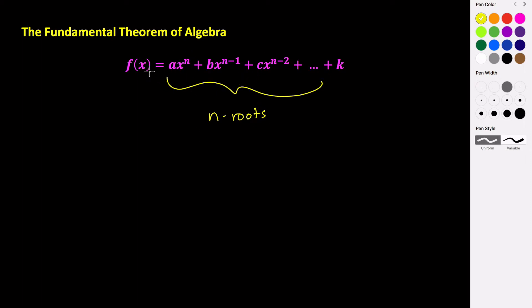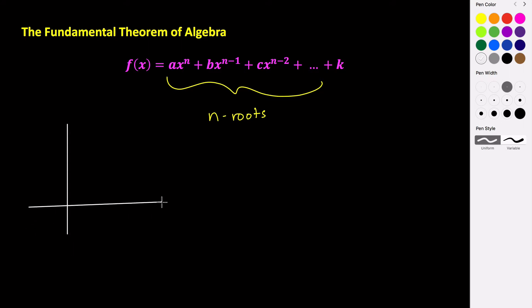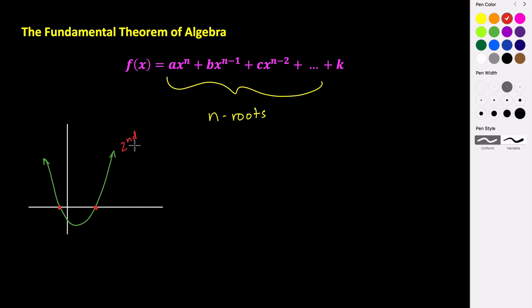Whatever the degree of your polynomial function is, you can expect to have exactly that many roots. We've seen this before — for example, we've looked at graphs of parabolas where the parabola opens up and crosses the x-axis in two places, crossing there and there. So this is a second degree polynomial and it has two roots.